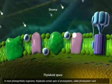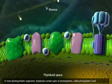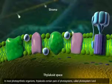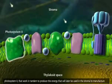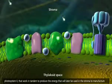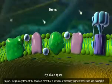In most photosynthetic organisms, thylakoids contain pairs of photosystems called Photosystem I and Photosystem II that work in tandem to produce the energy that will later be used in the stroma to manufacture sugars.